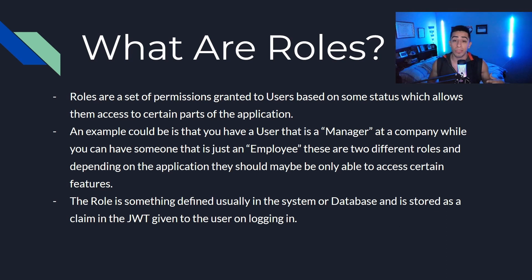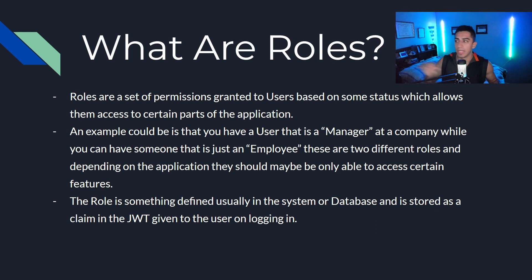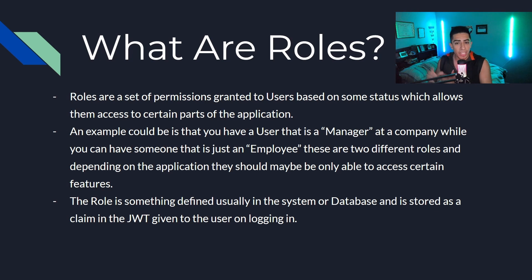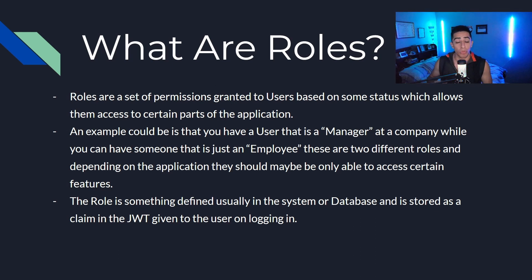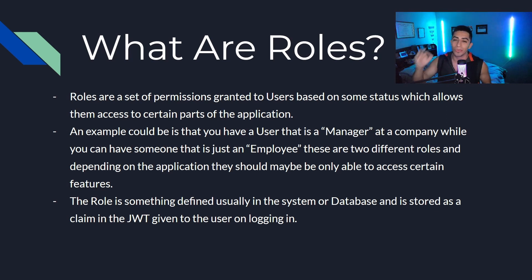An example could be a user that is a manager at a company, while you can have someone that's just an employee. These are two different roles and depending on the application, you should only be able to access some parts of it depending on your given role. The role is something usually defined in the system or database and is stored as a claim inside the JWT, which is then given to the user when you log in.